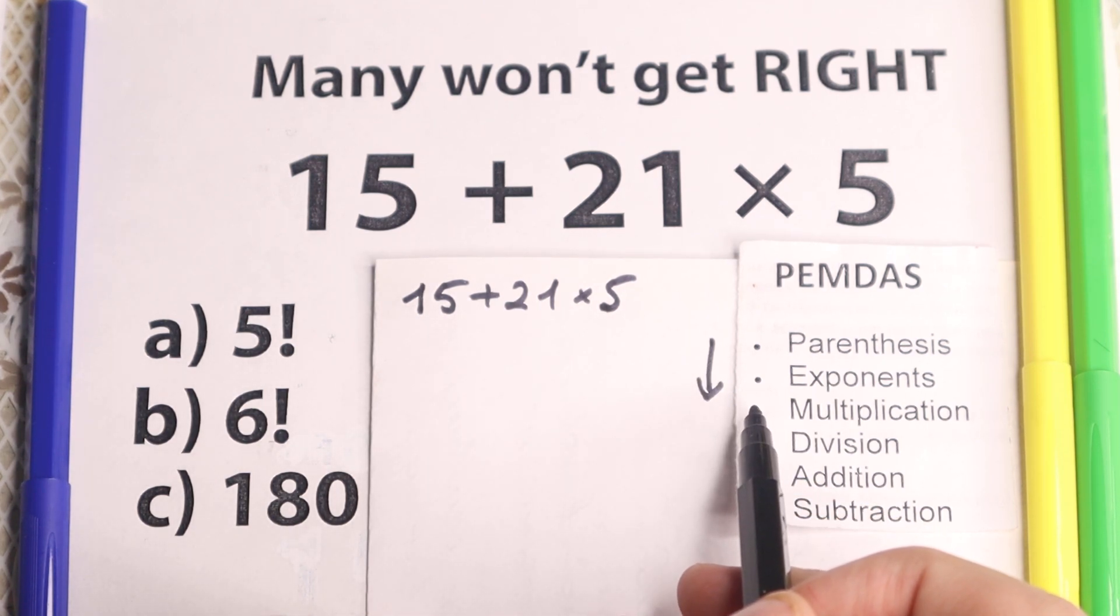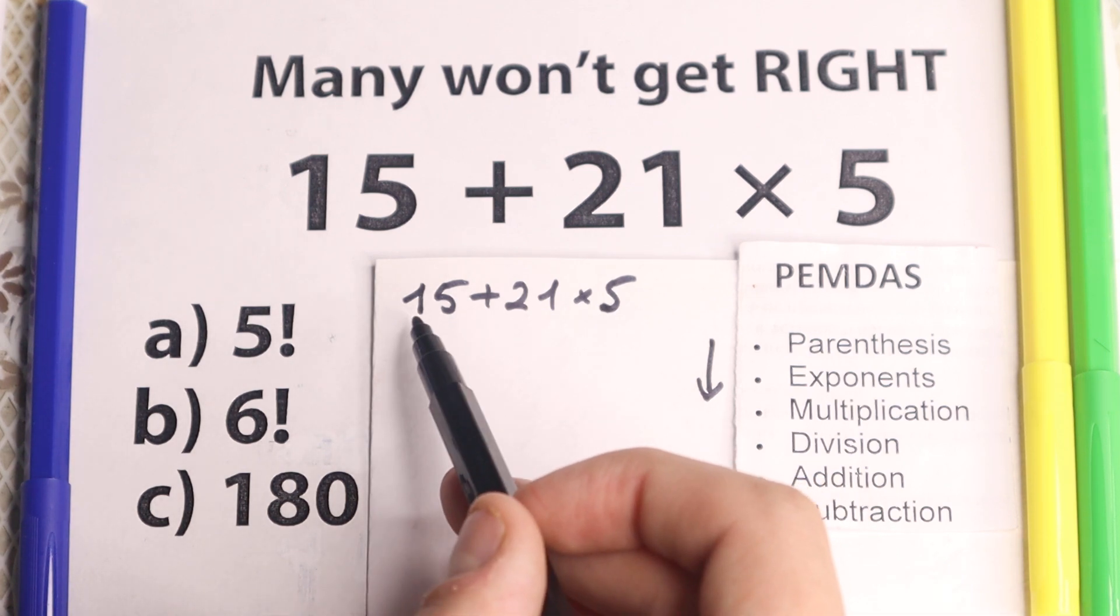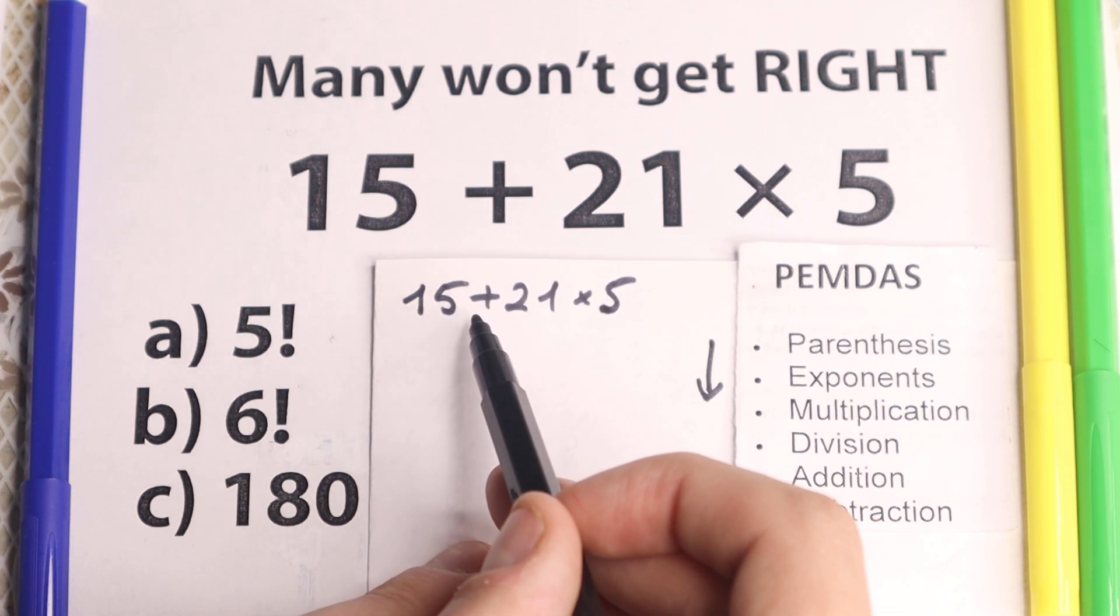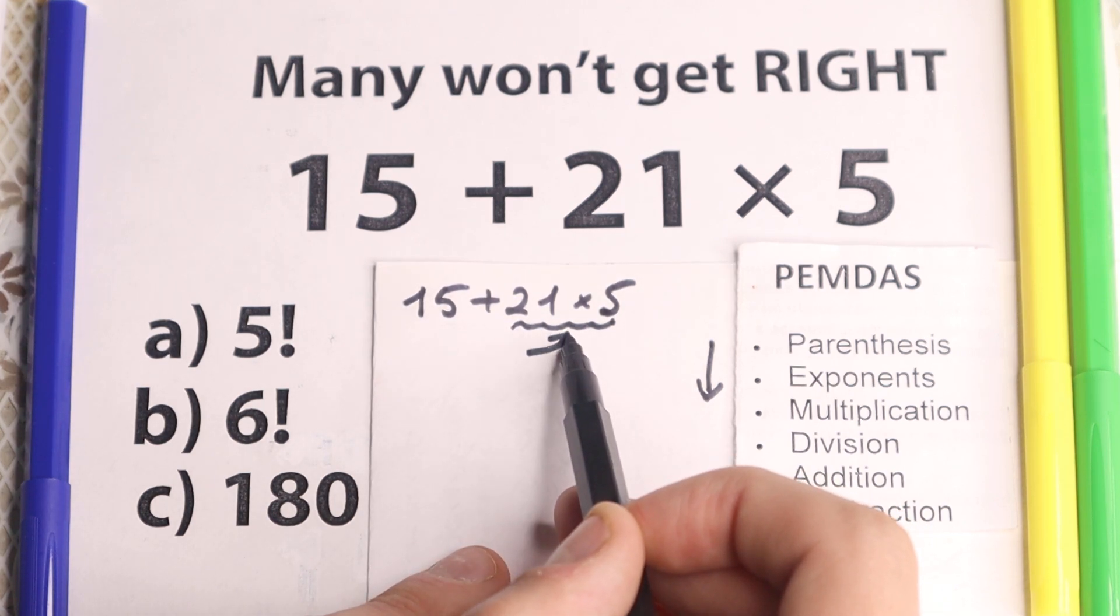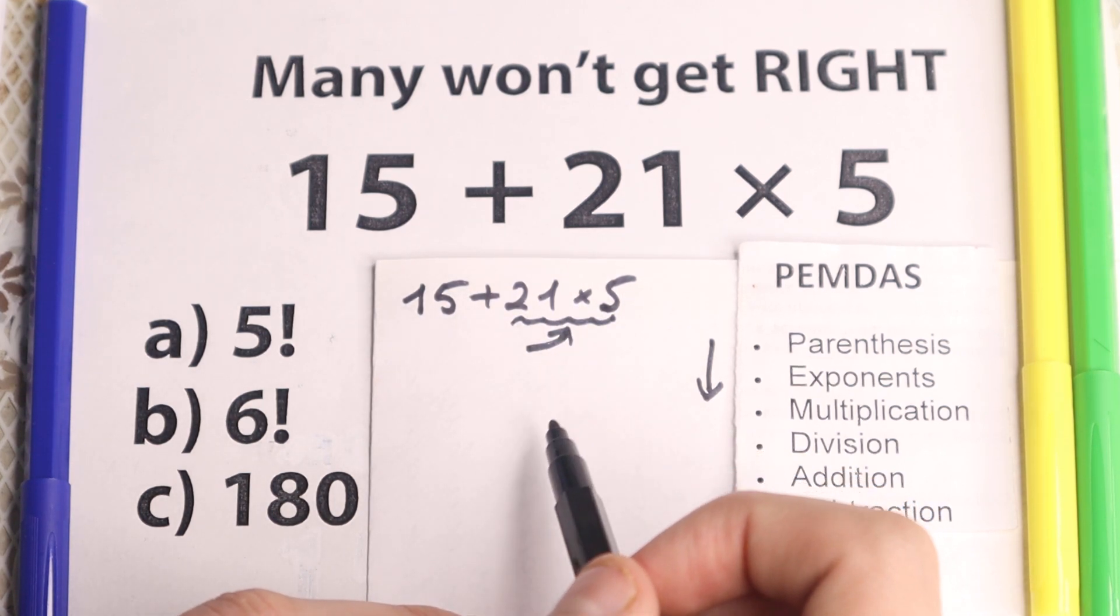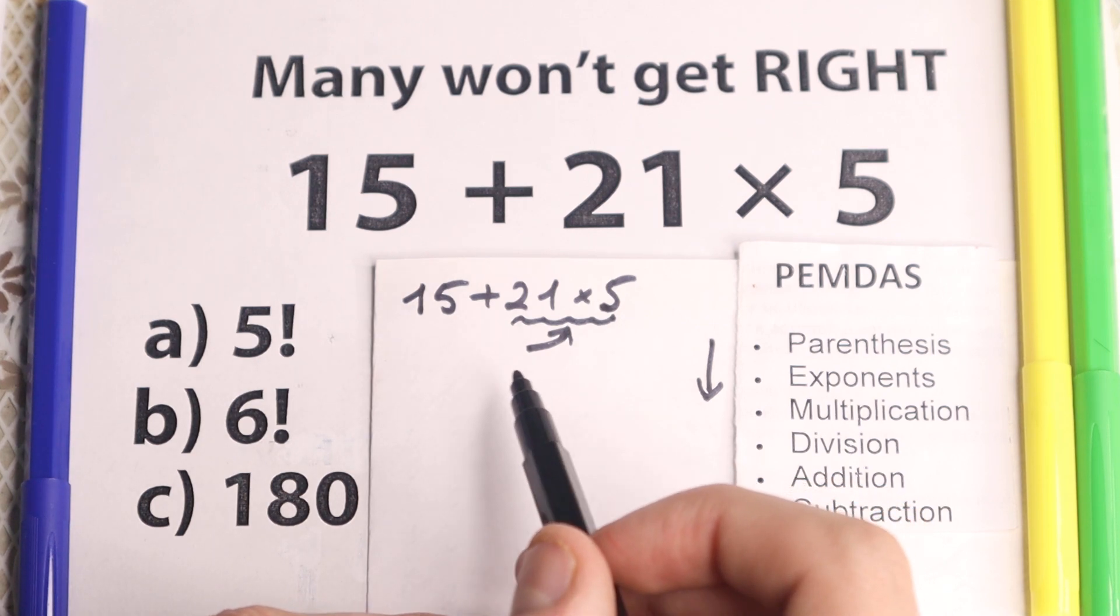What is the next step? Multiplication and division part, so are there any multiplication sign? Right here we don't have it, we have addition, but right here we have multiplication. So we need to start from this multiplication according to PEMDAS order of operation.